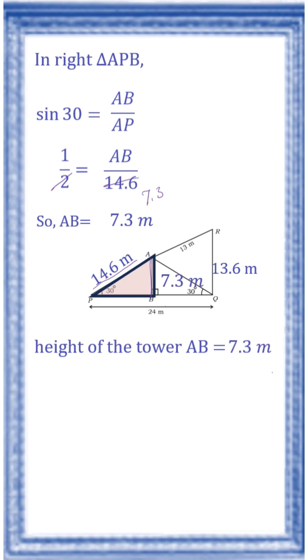Height of the tower RQ is equal to 13.6 meter. Length of AP is 14.6 meter.